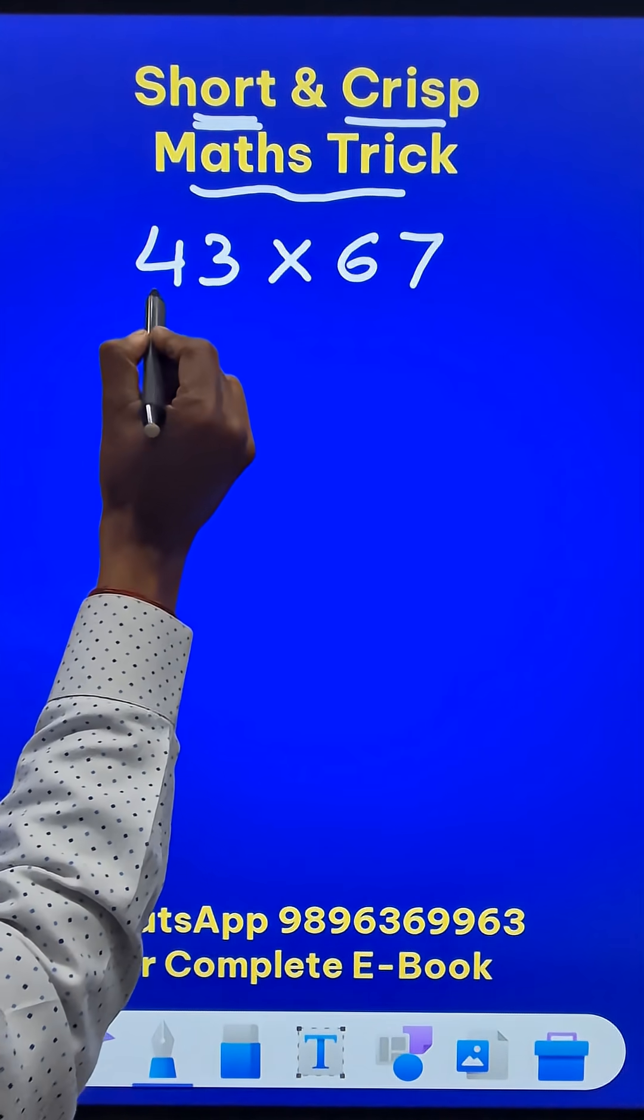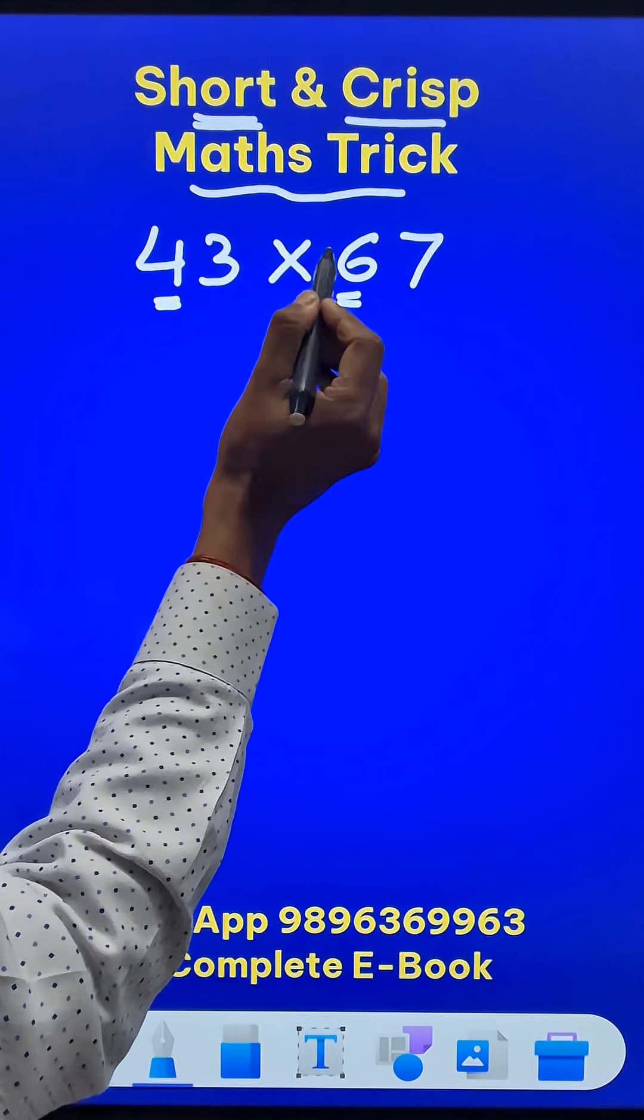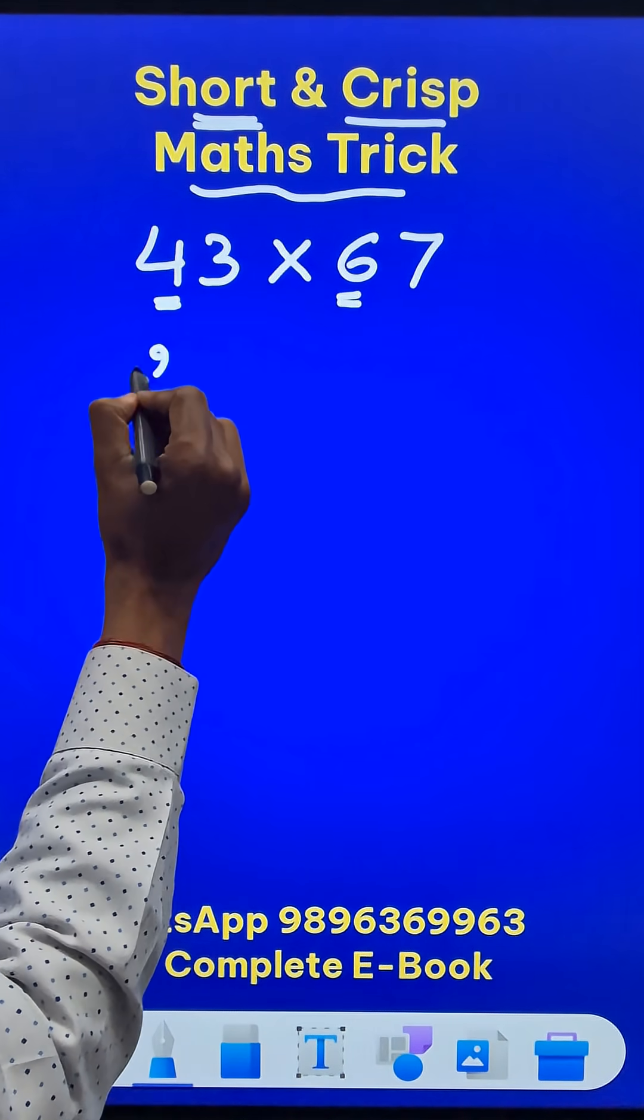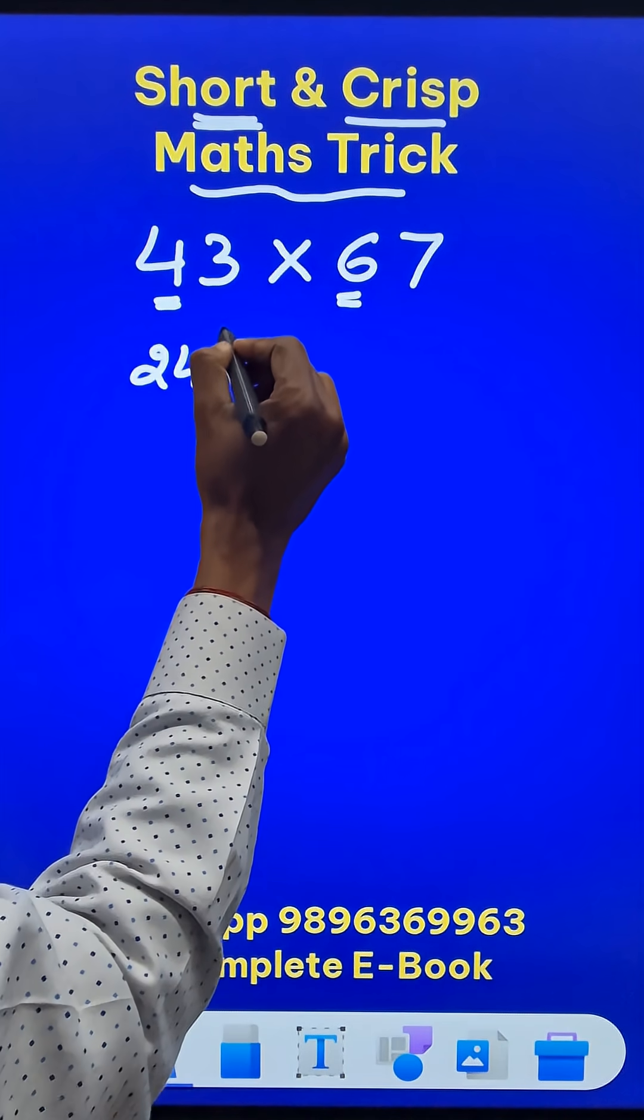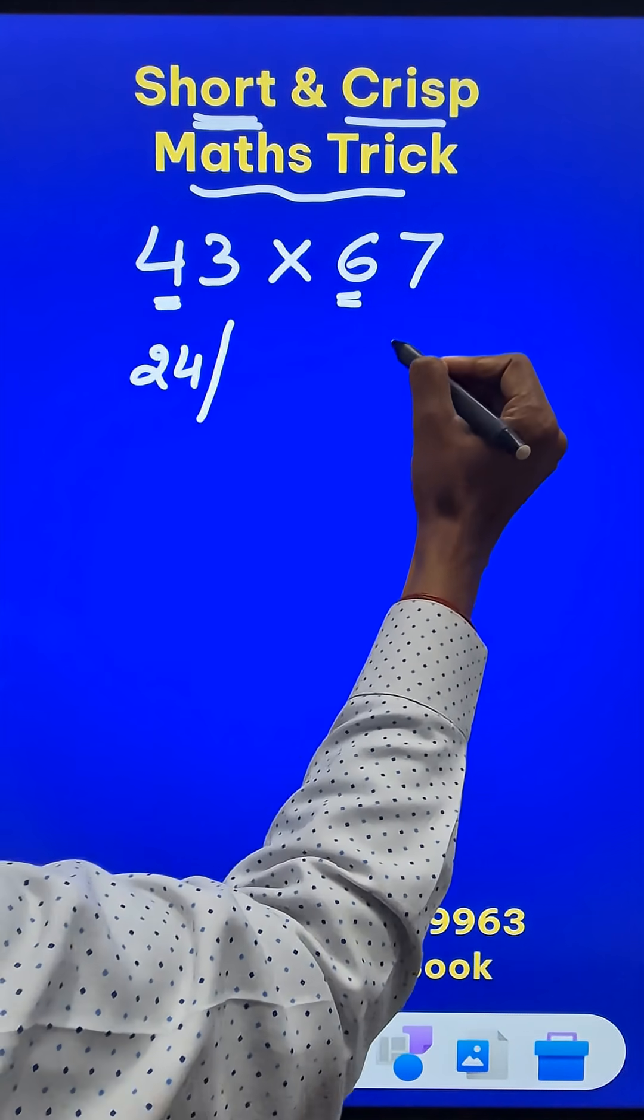What do you do first? First multiply the first digits of each number, 4 times 6 gives you 24. Separate it using a slash and then I'll put the middle number later.